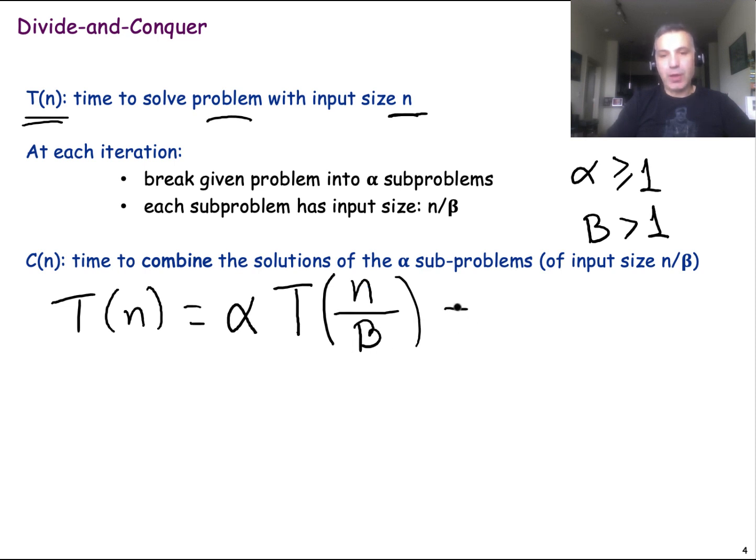Remember, though, we also have to do some work to combine the solutions of those alpha sub-problems. Let's denote that as C of n, combine n, meaning again that this is the work that we do to combine these sub-problems of size n over beta to a solution of the problem that has input size n.